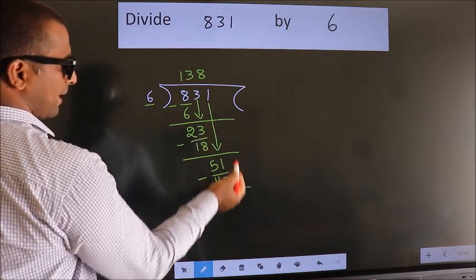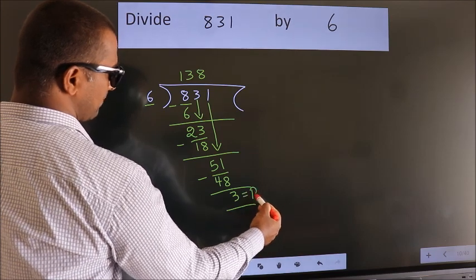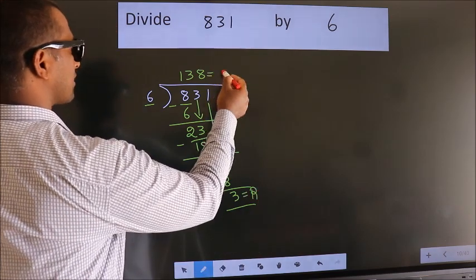No more numbers to bring down. So we stop here. This is our remainder. This is our quotient.